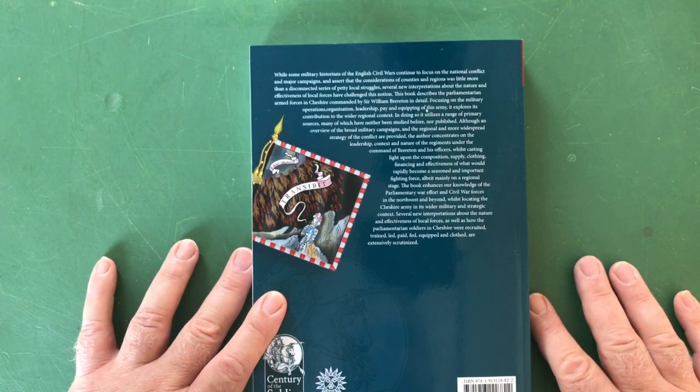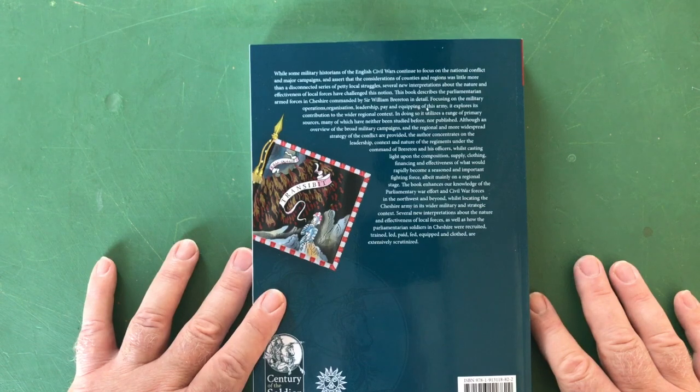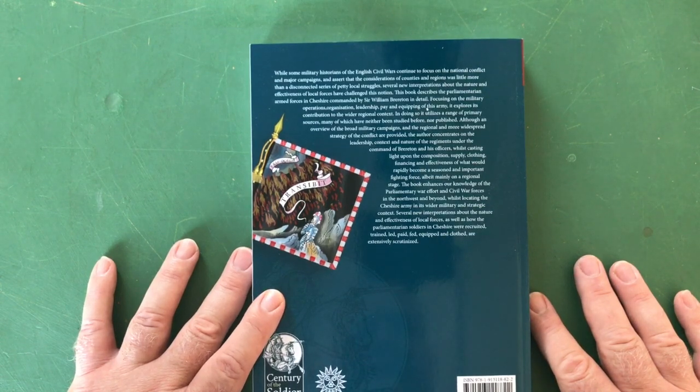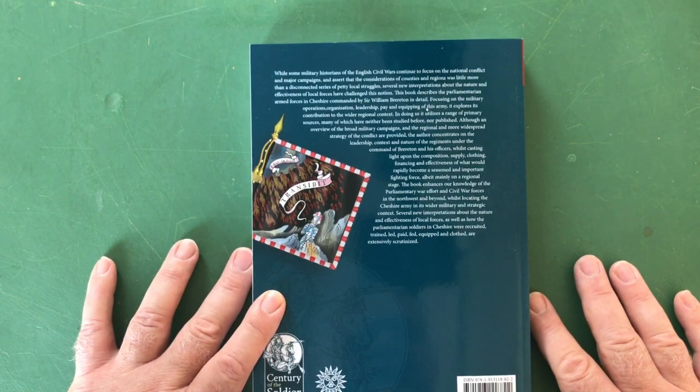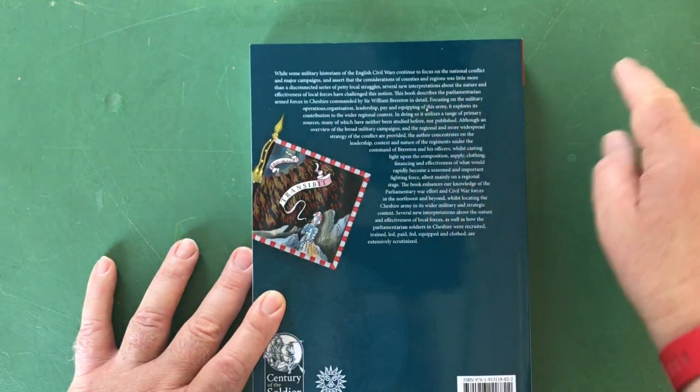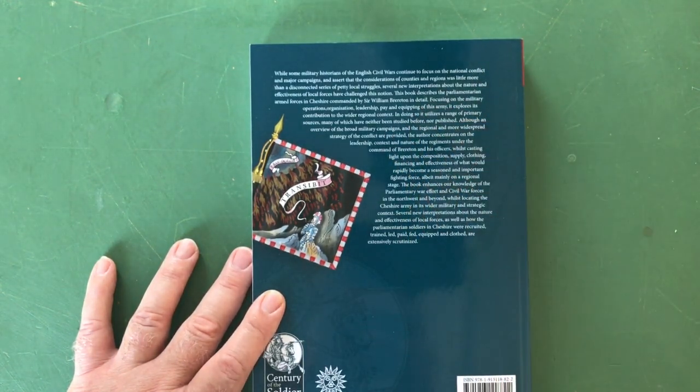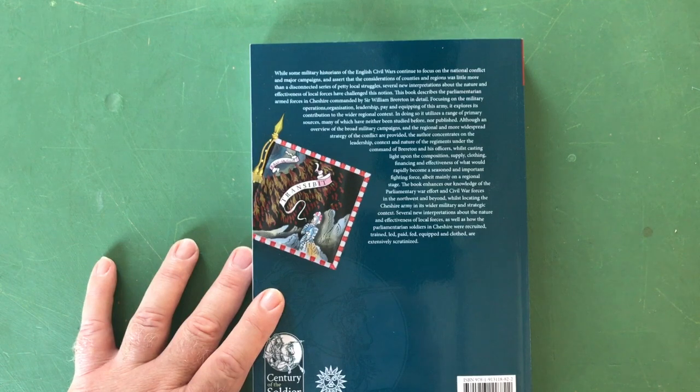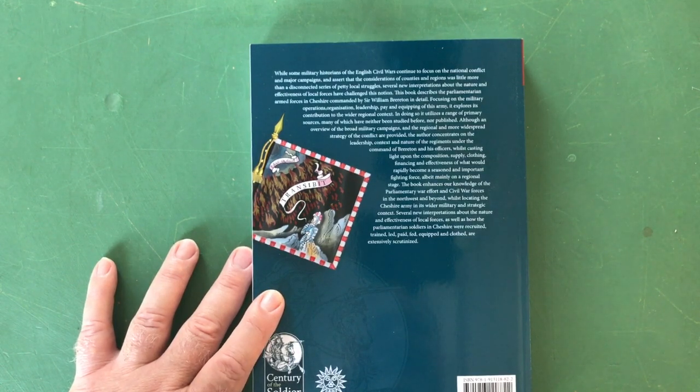This book describes the parliamentarian armed forces in Cheshire commanded by Sir William Brereton in detail, focusing on the military operations, organization, leadership, pay and equipping of this army.